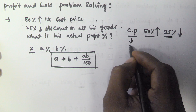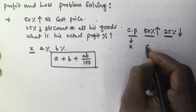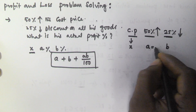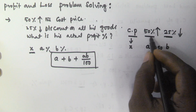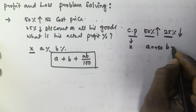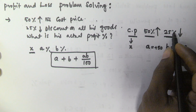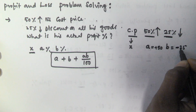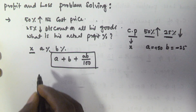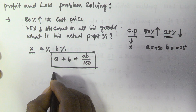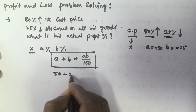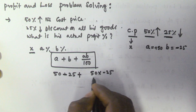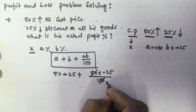In the same manner here, our cost price is x, a is 50 and b is 25. But actually a = +50, because he is increasing 50 percentage, and b = −25, because he is providing a discount — reducing is denoted by minus. We substitute these two values: a = +50 and b = −25, so we get 50 + (−25) + (50 × −25 / 100).